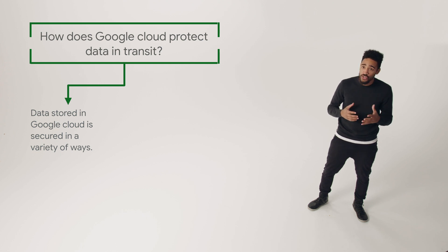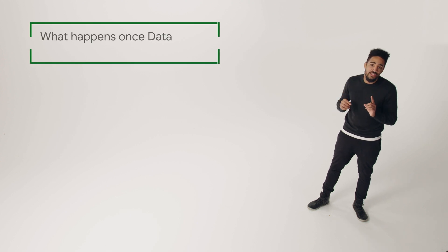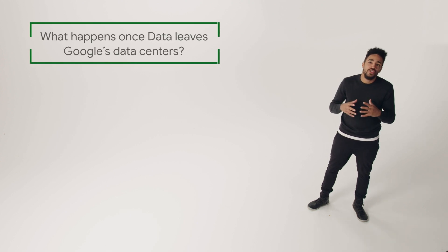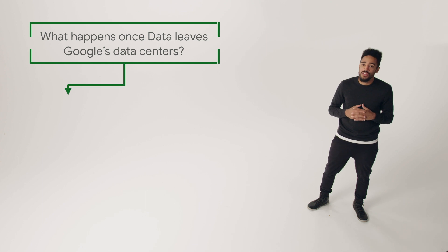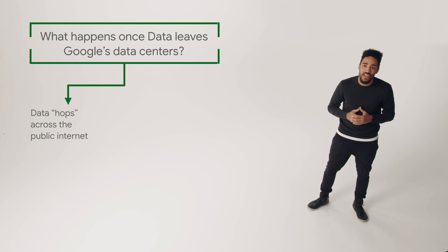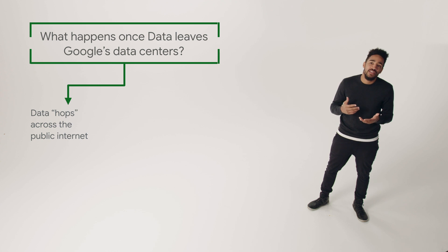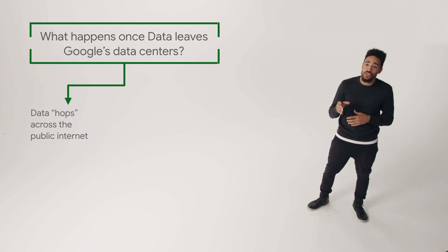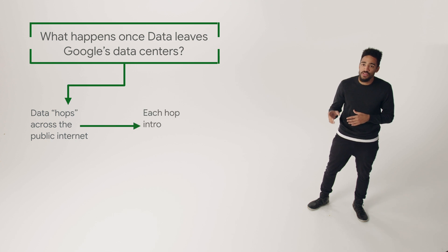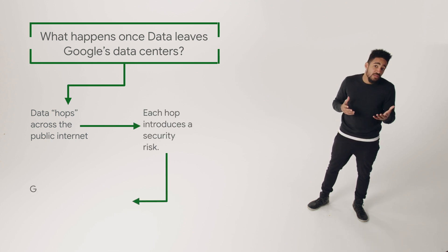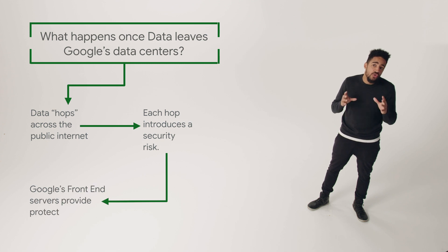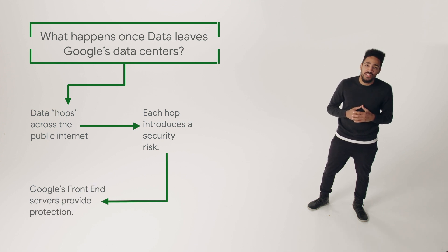Other layers of protection are also used, such as hardware encryption. But once data leaves Google's secure server, customer data must make several journeys across devices, known as hops, across the public internet. The number of hops depends on the distance between the customer's ISP and the solution's data center. Each additional hop introduces a new opportunity for data to be attacked or intercepted. Because it's linked to most ISPs in the world, Google's global network improves the security of data in transit by limiting hops across the public internet.